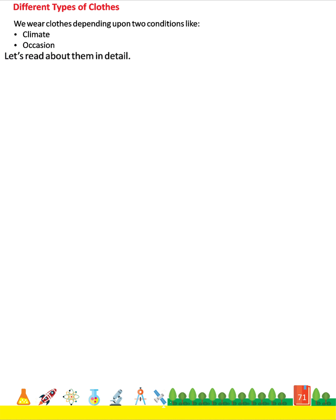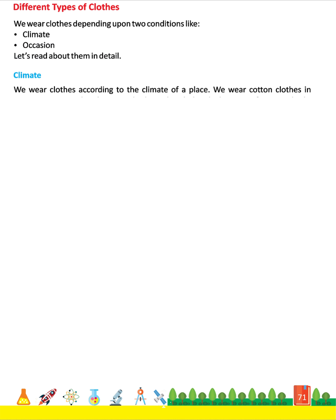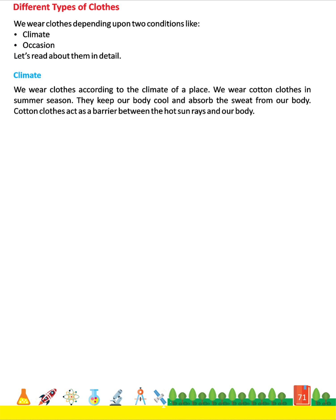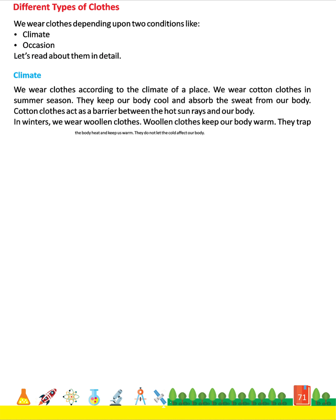Let's read about them in detail. Climate. We wear clothes according to the climate of a place. We wear cotton clothes in summer season. They keep our body cool and absorb the sweat from our body. Cotton clothes act as a barrier between the hot sun rays and our body. In winters, we wear woolen clothes.